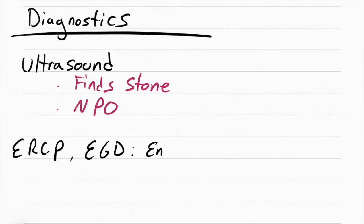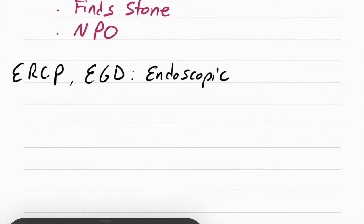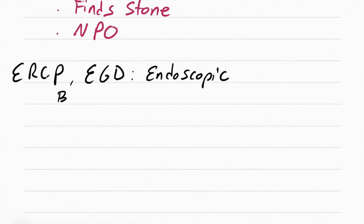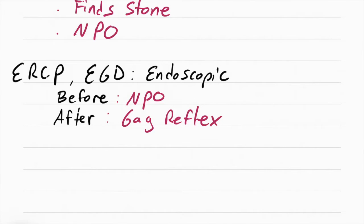The next diagnostic they use is something called an ERCP or an EGD. Both of these are endoscopic procedures, which means they stick a camera down the throat all the way through the stomach and into the small intestine to look at the bile ducts. Your job is to make sure the patient is NPO before this procedure and you check gag reflex afterwards. The reason you have to check gag reflex is because they stick a camera down the throat. They also fully sedate the patient so the patient's asleep.